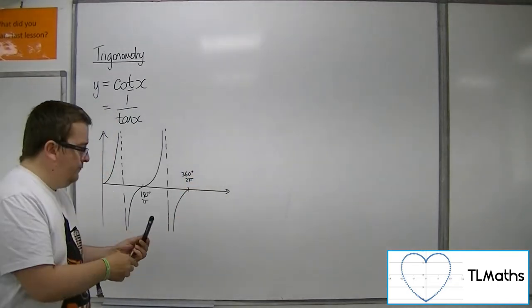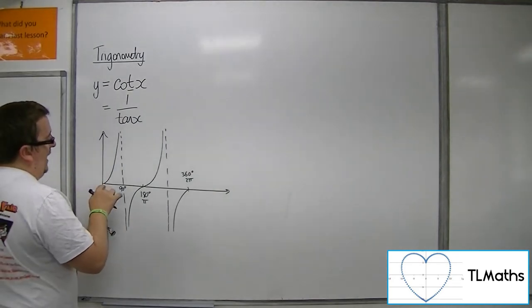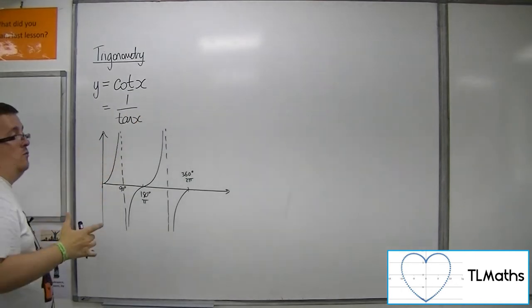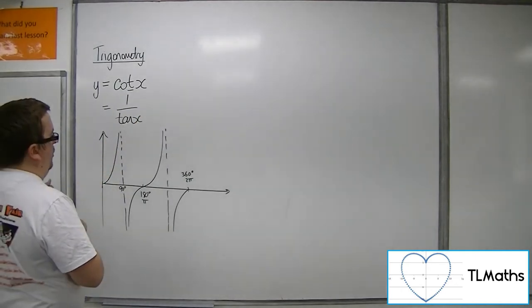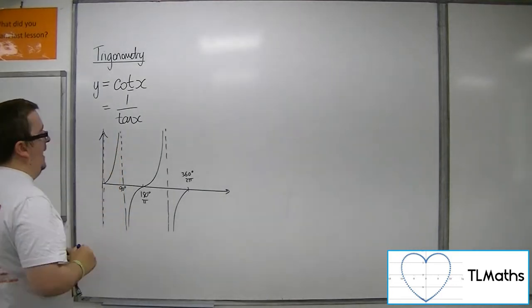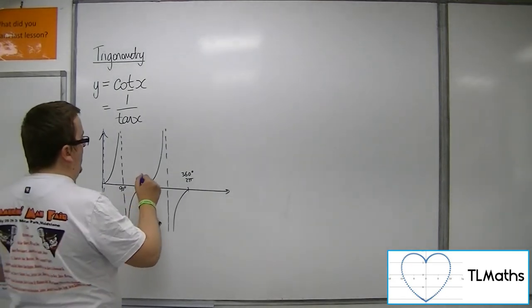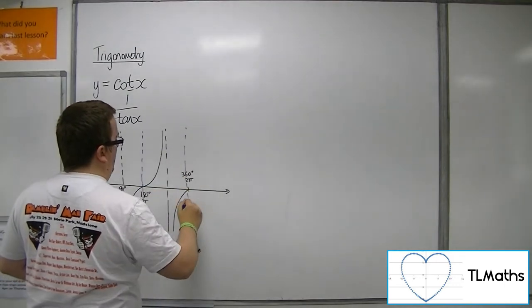When we've got tan of 0, we get 0. So 1 over 0, we must have an asymptote. So for cot, we have an asymptote at 0, and we're going to have an asymptote again at 180 and at 360.